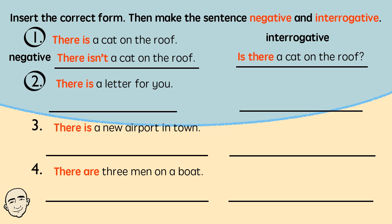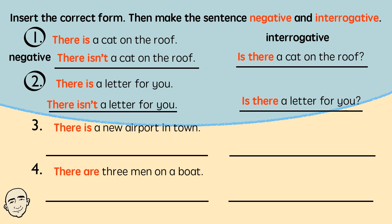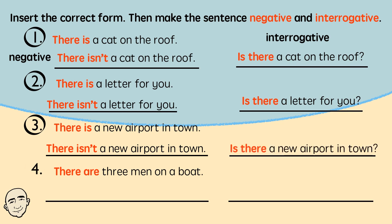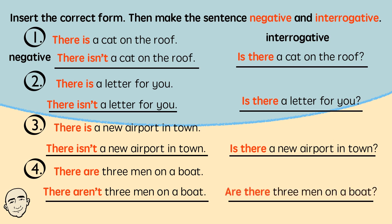There is a letter for you. There isn't a letter for you. Is there a letter for you? There is a new airport in town. There isn't a new airport in town. Is there a new airport in town? There are three men on a boat. There aren't three men on a boat. Are there three men on a boat?